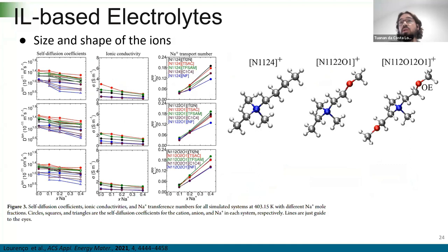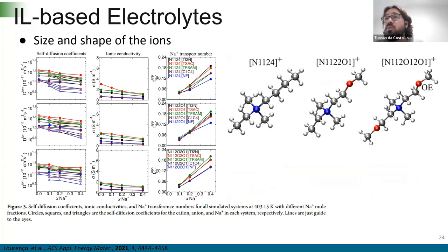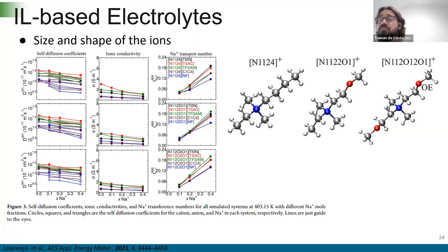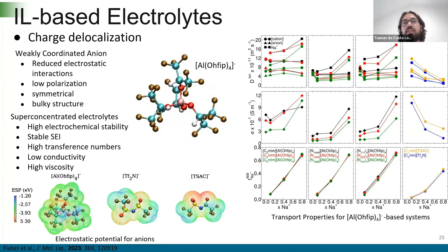Just as we can tweak the anion structure to improve transport, we can also tweak the cation structure. Looking at ammonium-based cations: adding an ether chain to the cation increases its flexibility, but also adds a negative site to the cation structure, leading to weaker interactions between ions and improving transport. However, adding a second ether chain increases the cation size too much and size becomes the dominant factor limiting transport.